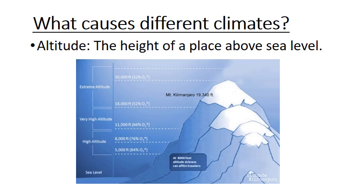The second cause for climate variation is altitude — the height of a place above sea level. The higher we are, the colder it is. Mount Kilimanjaro, which you can see in the picture, is almost right on the equator, yet its top is covered with snow all year round. Less than 100 kilometers away on the plain, the average temperature all year round is about 30 degrees Celsius.